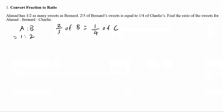To do that, you simply multiply this number by 2, because 1 times 2 will give you 2. When the top times 2, the bottom also needs to times 2, so you will get 2 over 8 of Charlie. On the left hand side is still 2 thirds of Bernard. Once you have the numerator the same number — in this case you have a 2 here and a 2 here — the ratio between Bernard and Charlie is simply the denominator, which is 3 to 8.